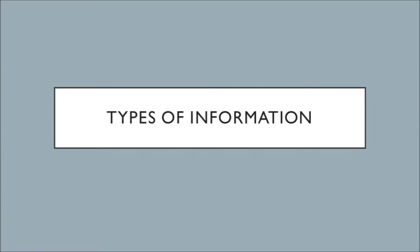Part one: we're going to talk about different types of information. I'm going to talk about three specific types of information that you're likely to come across when you're searching these databases: popular literature, scholarly literature, and trade or professional publications.